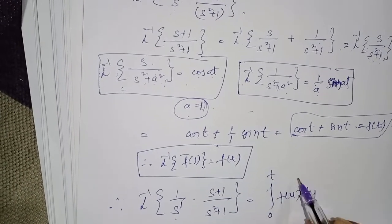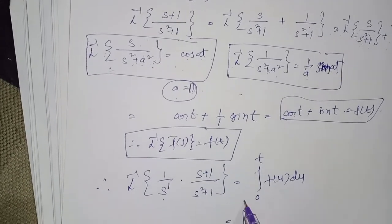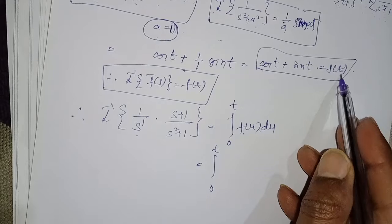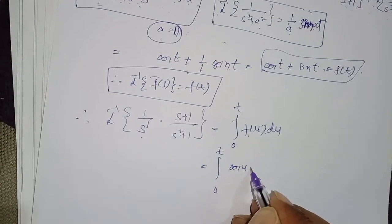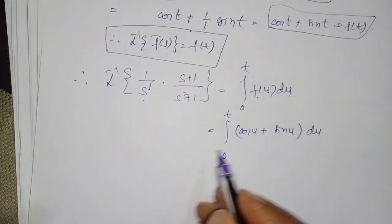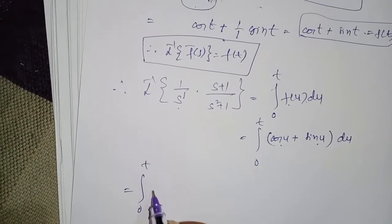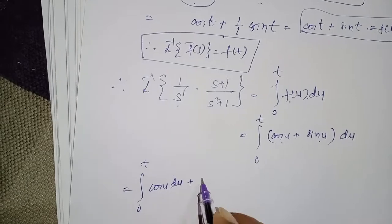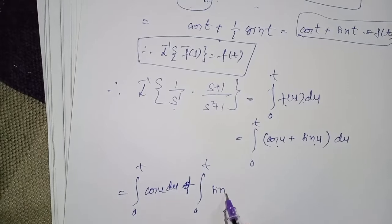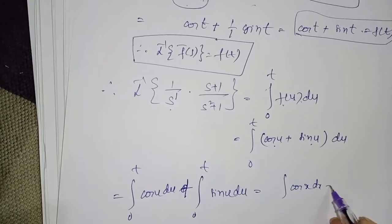That equals the integral from 0 to t of f(u) du. Substituting t = u: f(u) = cos(u) + sin(u). Split the integral into two parts: integral from 0 to t of cos(u) du plus integral from 0 to t of sin(u) du.